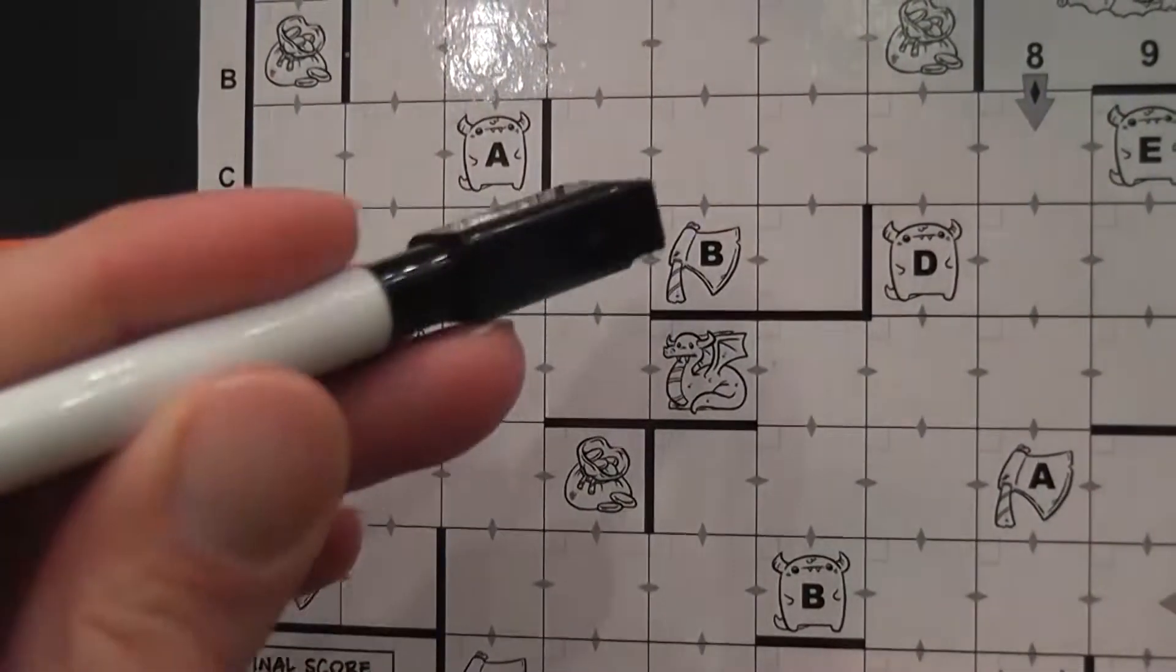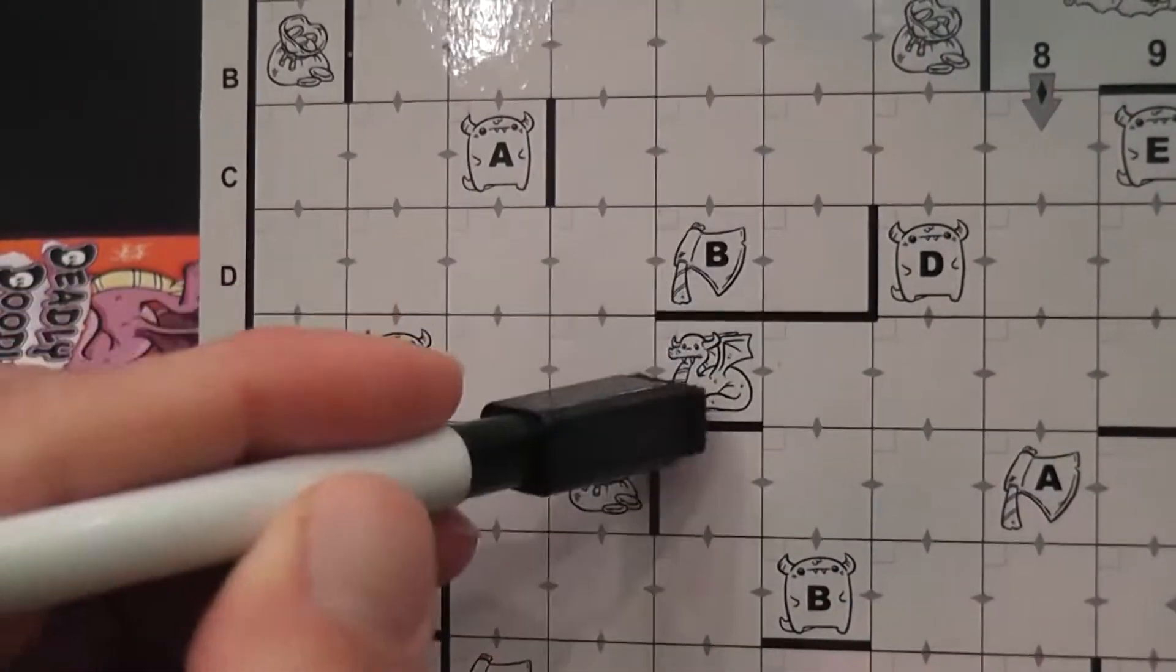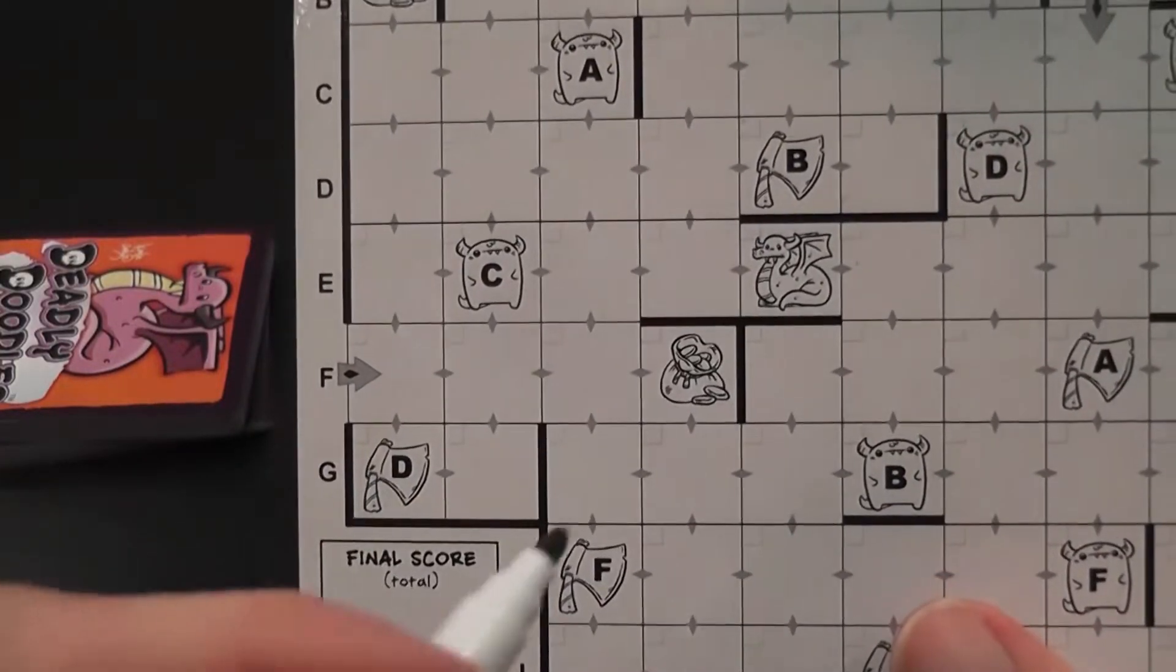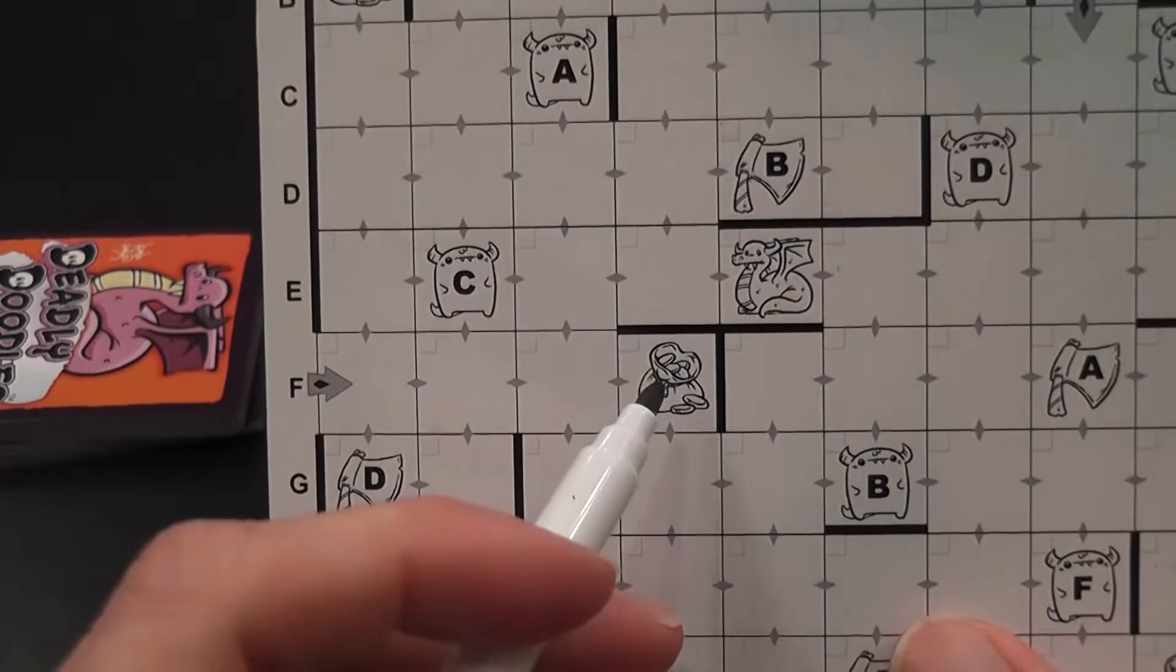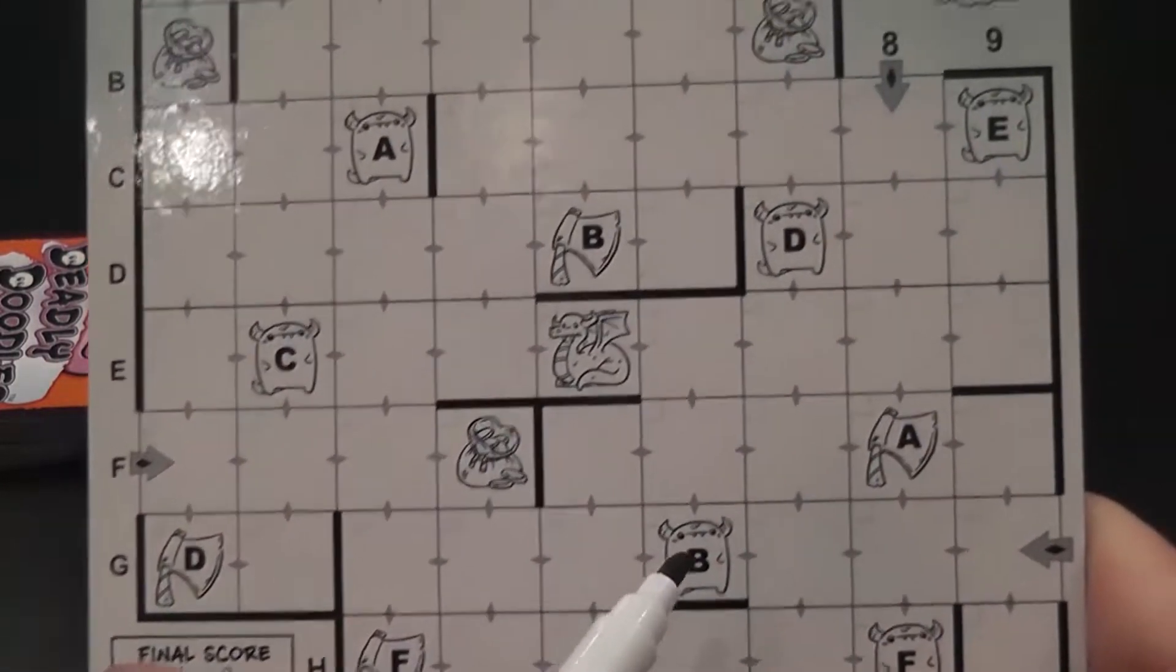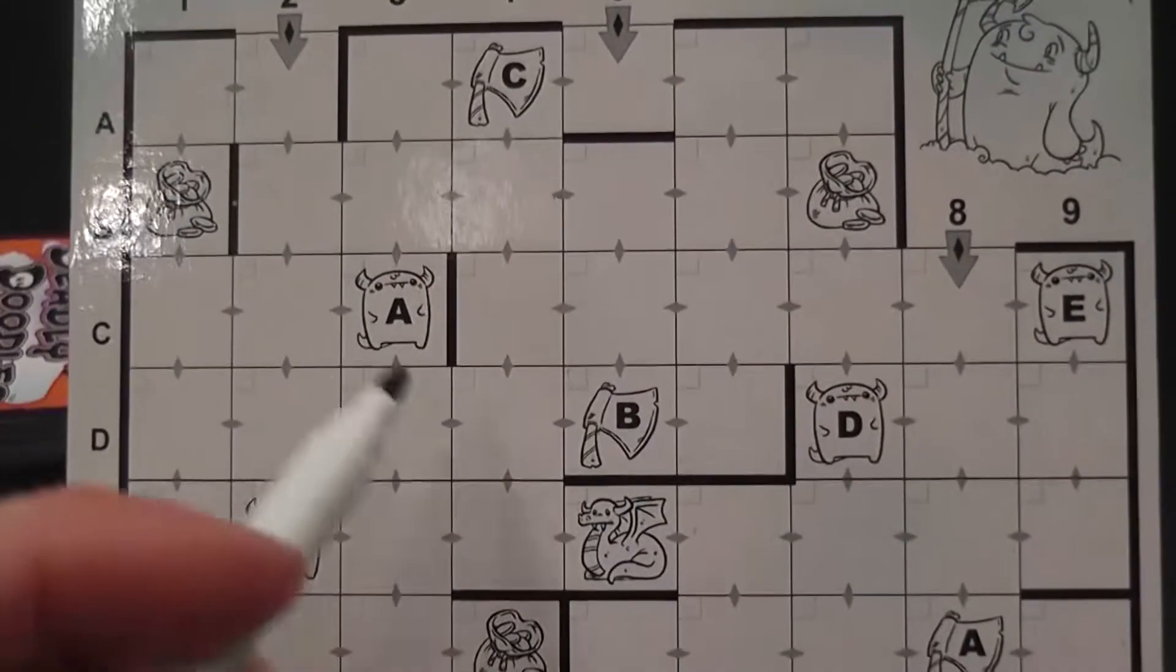Now what we have in the room is monsters, weapons, the dragon, and loot. We want to touch as much loot as possible, entering as many rooms with loot as possible. Entering rooms with monsters, but only if we have the matching weapons.